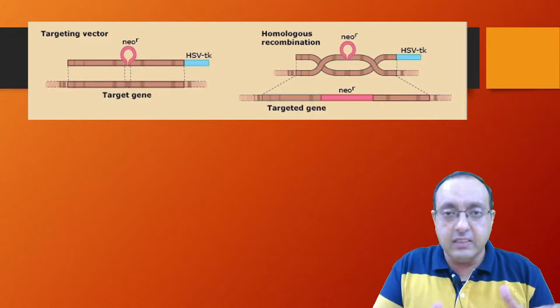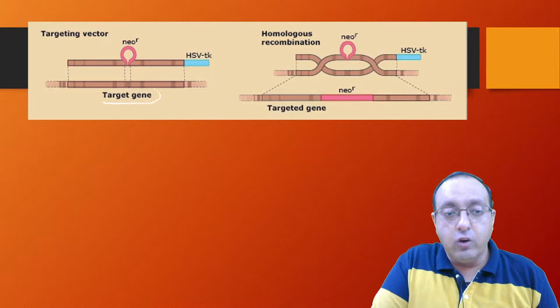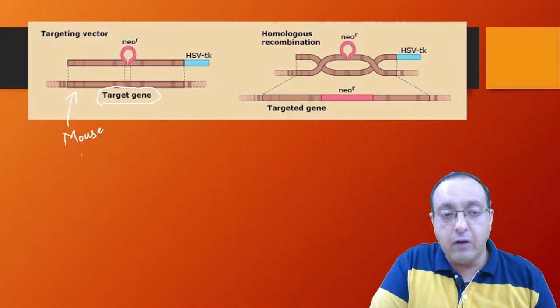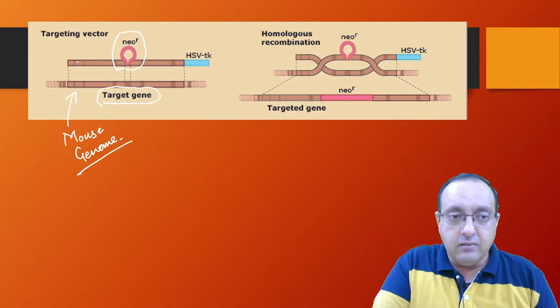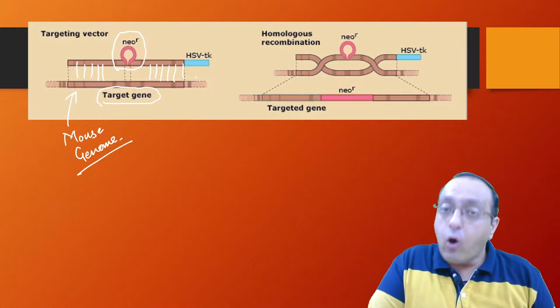So this is the design of the targeting vector. We have the target gene that you are interested in—so this is in the genome. In our case, this will be the mouse genome. And here we have a neomycin resistance gene inserted, and these regions are basically homologous. Along with that, the targeting vector also contains a thymidine kinase gene.